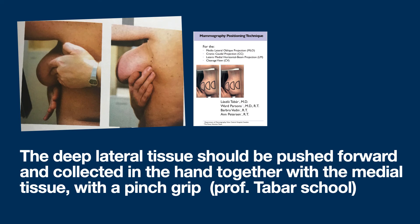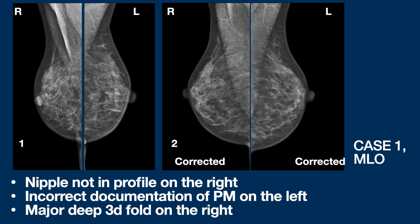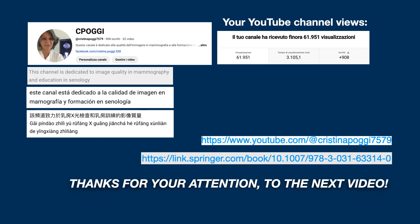About case 1, in which we note the right nipple not in profile, the pectoralis muscle not long enough on the left side, and a major fold on the right side — to correct all of these, I followed the suggestions listed above, and the result is in image 2. I hope you find these tips useful. See you at the next one. Bye!